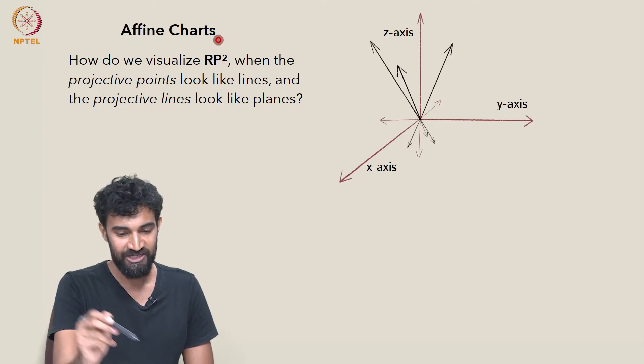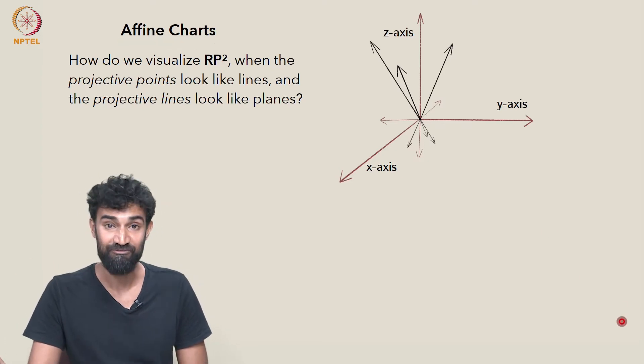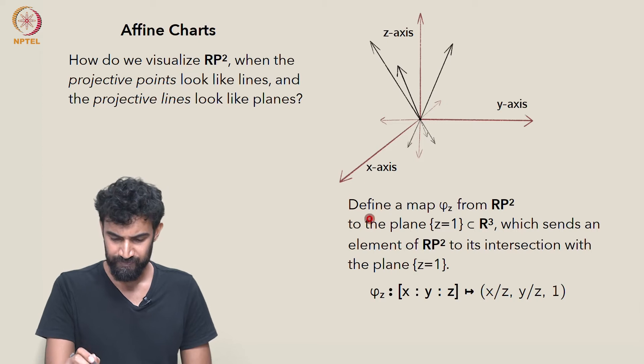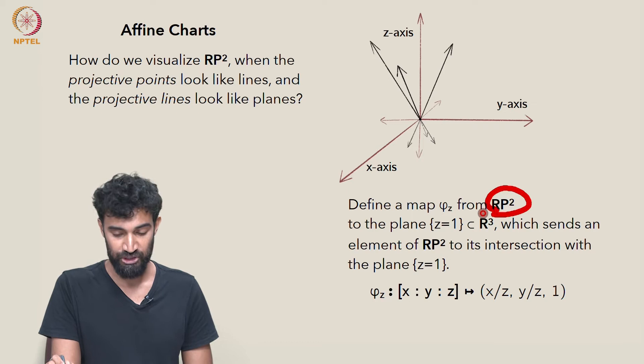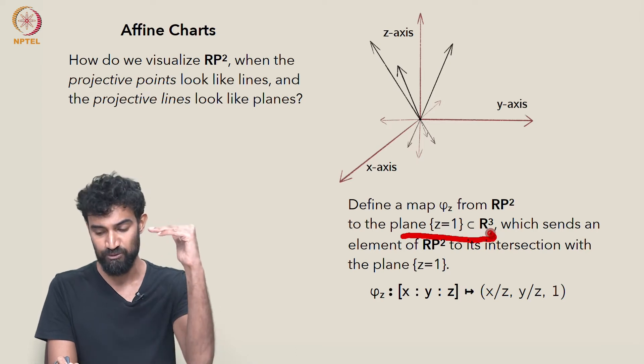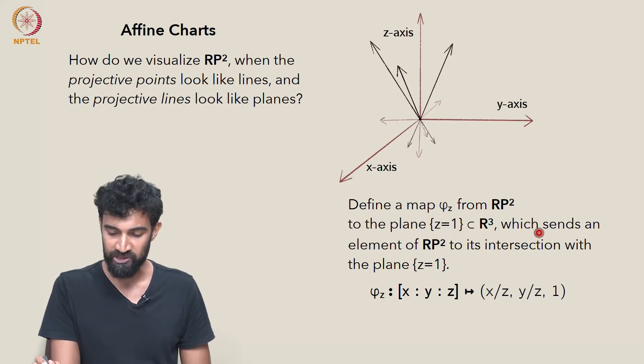And this is where affine charts are going to be helpful. So I want to define a map φ_z from RP², remember RP² is a set of all lines through the origin, to the plane z equals 1 in R³, to that specific plane z equals 1.